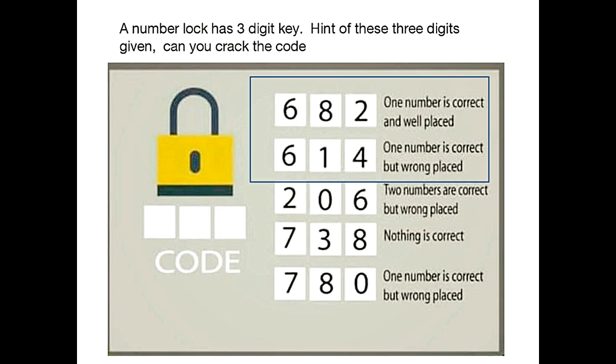If you observe closely, 6 cannot be the correct answer because 6 is placed at the first position in both the conditions. So 6 cannot be correct and well placed for both conditions. Let's eliminate 6 from all the conditions because 6 cannot be the right answer.